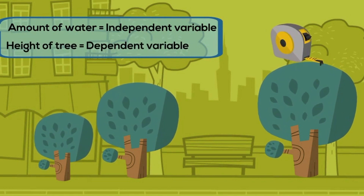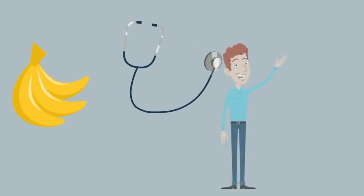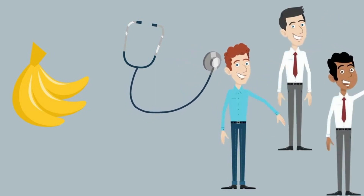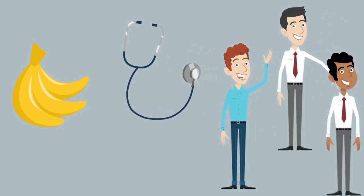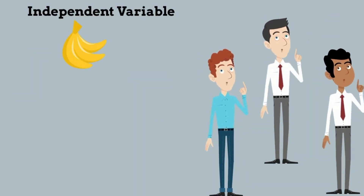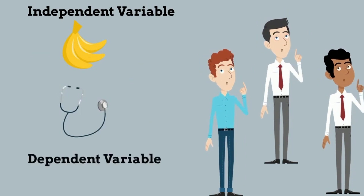Another example: will eating five servings of bananas a week reduce the blood pressure in male patients? The number of bananas that the patients eat each week will be the independent variable because it will change, and the blood pressure is the dependent variable because it is what you are measuring.